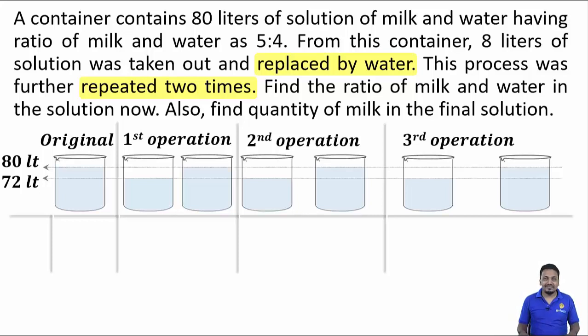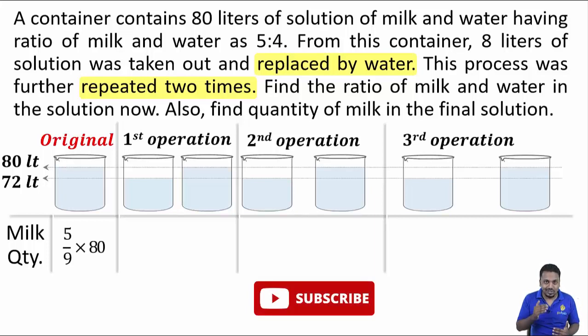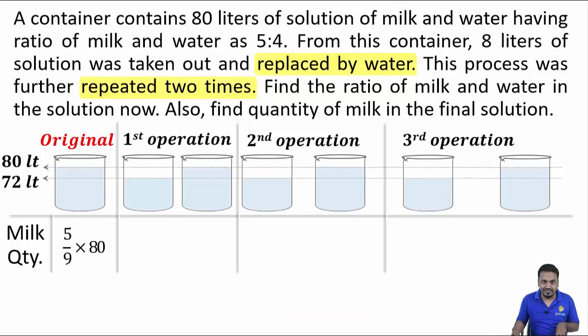We want final milk quantity. Initially, milk is 5/9 × 80 liters. Milk proportion into volume. Now, 8 liters of mixture is taken out. 8 liters out of 80.